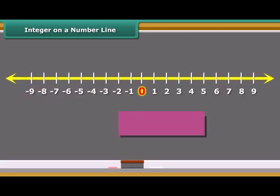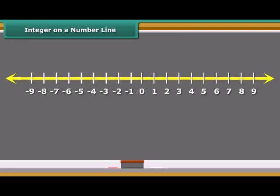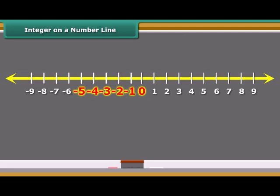Here to mark plus 2 on the number line, we move two points to the right of zero. Similarly, to represent minus 5, we move five points left of zero.